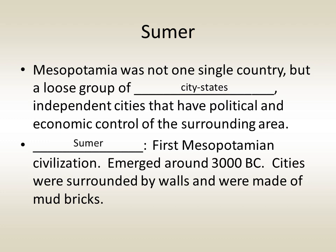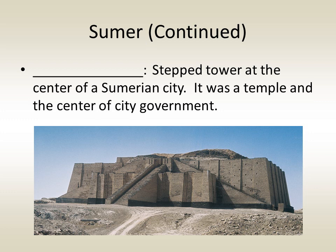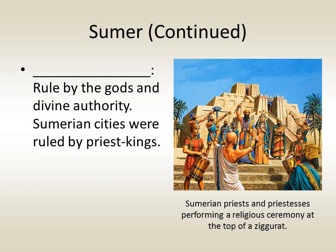The first Mesopotamian civilization was Sumer. It emerged around 3000 BC. Each Sumerian city-state included a ziggurat, a stepped tower at the center of the city that served as both a temple and the center of city government. Sumerian city-states were all theocracies, meaning they were ruled by the gods and divine authority, and were governed by priest-kings.